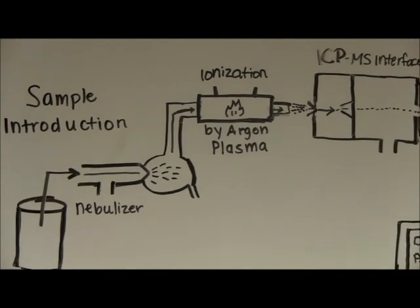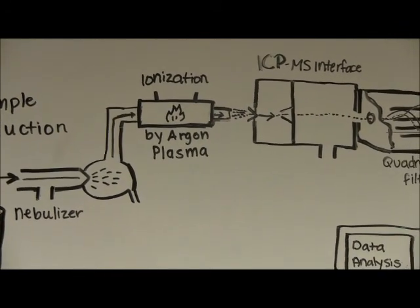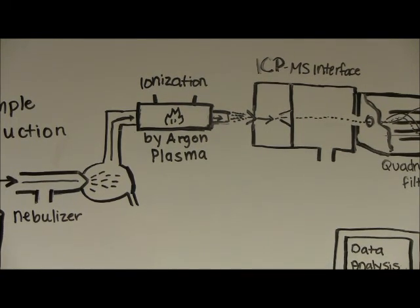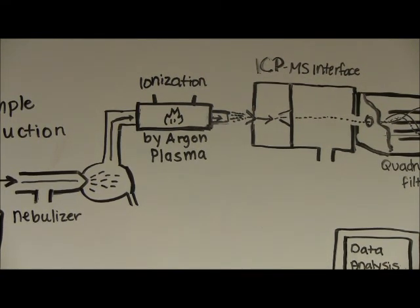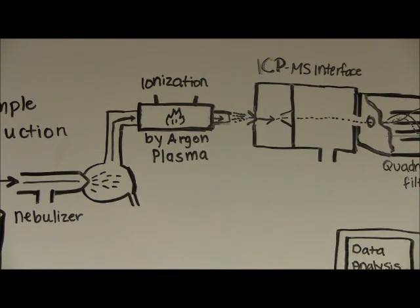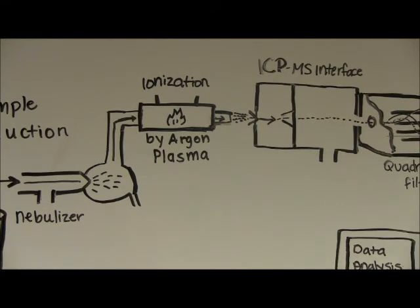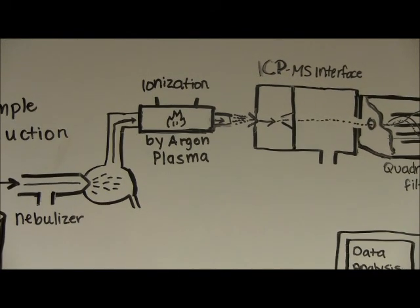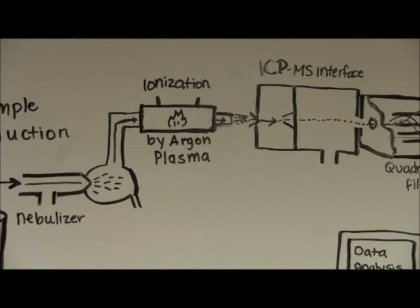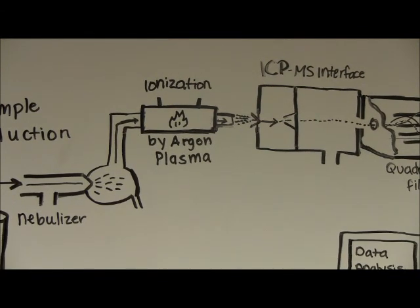Once the sample passes through the nebulizer and is partially desolvated, the aerosol moves into a torch body and is mixed with more argon gas. A coupling coil is used to transmit radio frequency to the heated argon gas producing an argon plasma flame located at the torch. The hot plasma removes any remaining solvent and causes sample atomization followed by ionization. In addition to being ionized, sample atoms are excited in the hot plasma, a phenomenon on which ICP atomic emission spectroscopy is based.